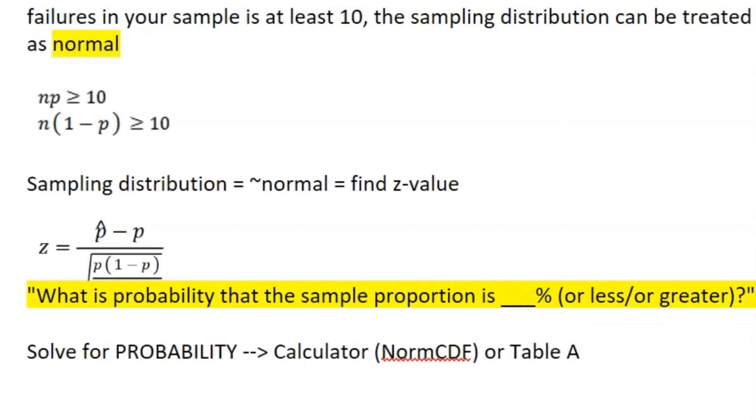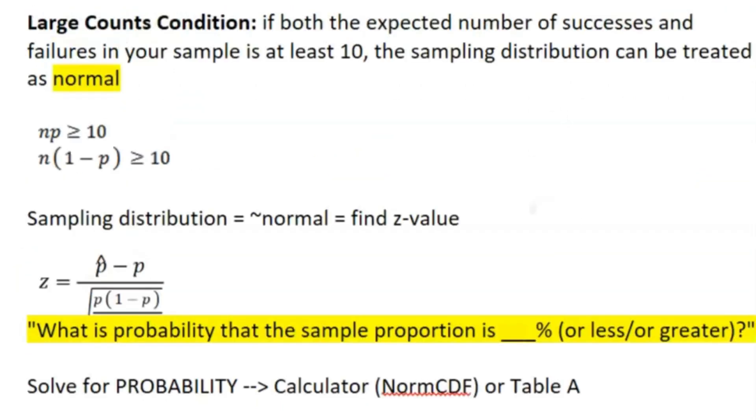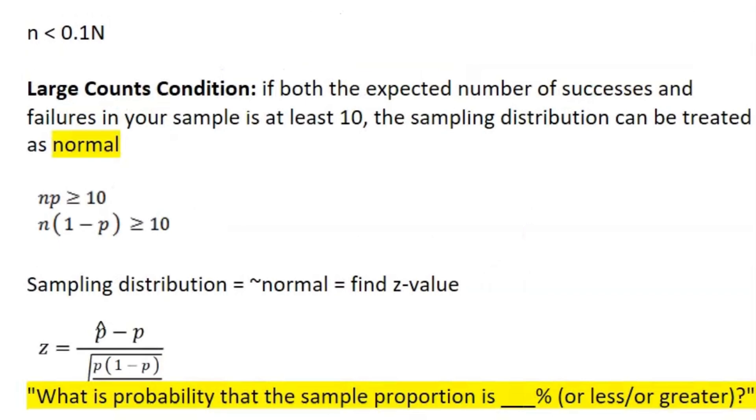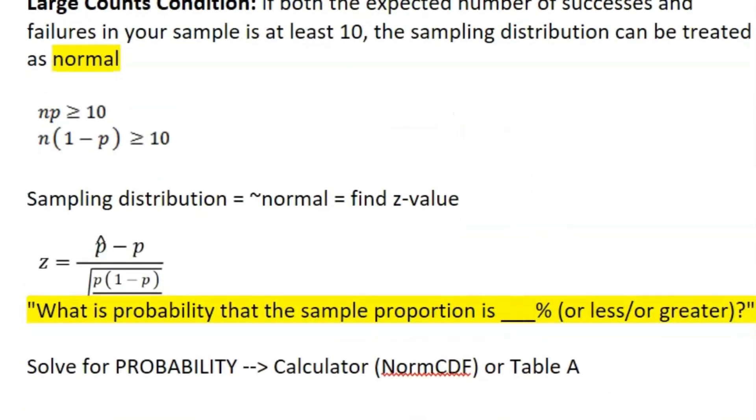It's also important to note that if your sampling distribution is approximately normal—which it should be because we have to satisfy the large counts condition—then we can find the z-value, which is the number of standard deviations our statistic is away from the mean. Once we get the z-value, we can solve for the probability of something.